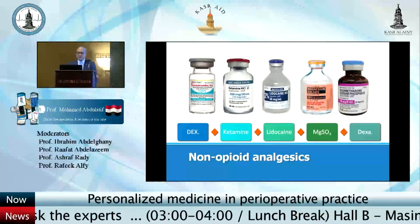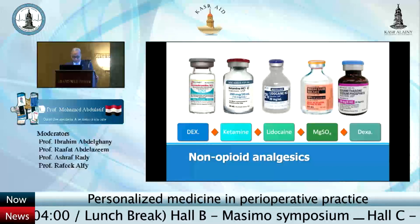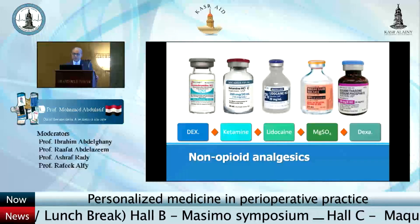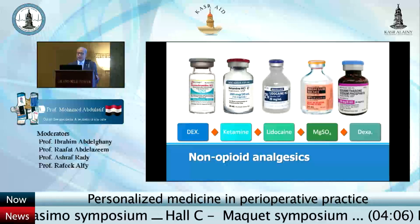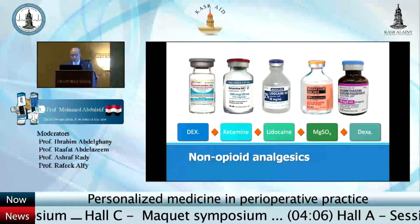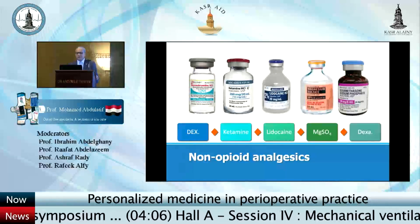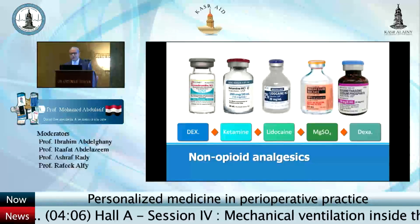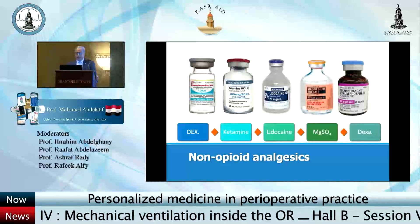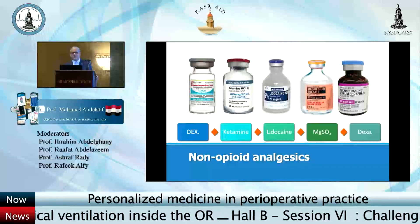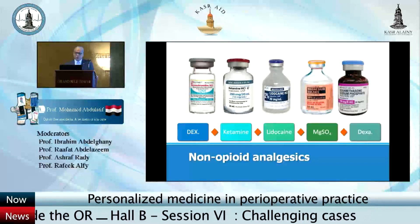We have several potential drugs: dexmedetomidine, an alpha-2 agonist; ketamine, mentioned also by Laurent; intravenous lidocaine, again mentioned by Laurent; magnesium sulfate; and dexamethasone, which we use every day as an antiemetic. We'll explore the literature and check the evidence for the analgesic potential of this group of medications.